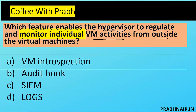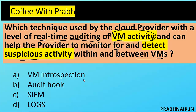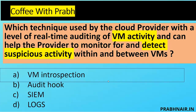Next coffee shot: which technique is used by the cloud provider for real-time auditing — keyword is real-time auditing — of VM activity specifically, and helps the provider monitor for and detect suspicious activity within and between VMs? We already discussed VM introspection. Option B is hardware hook, and then SIEM and logs. Logs are reactive. SIEM aggregates logs from multiple systems, correlates them, and provides a unified report. VM introspection also provides logs to SIEM, but here the question is specifically about the technique. So VM introspection is again the best answer — it is a key feature of the hypervisor by which we can monitor VM activities in a running state. Answer is A.